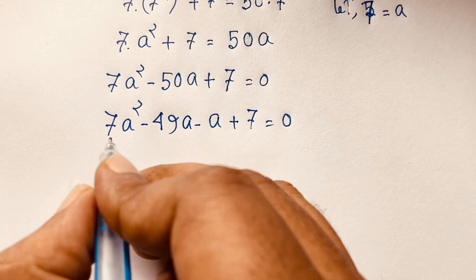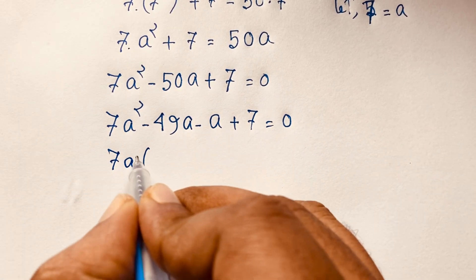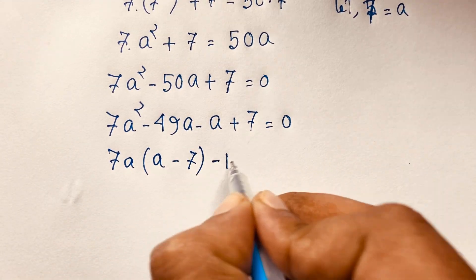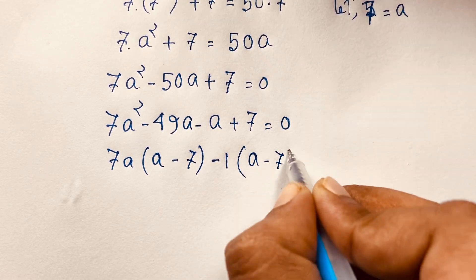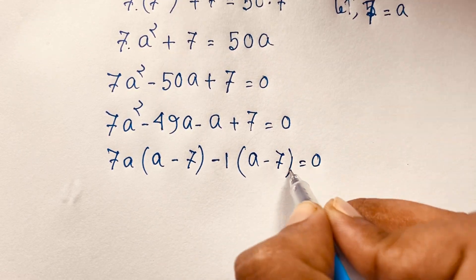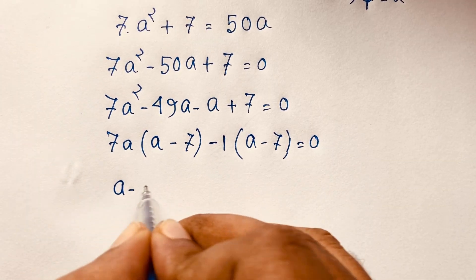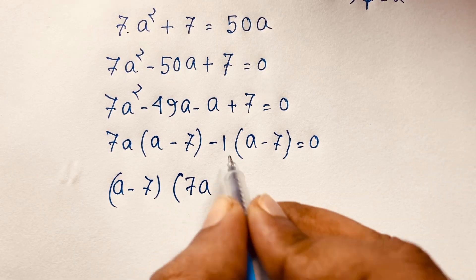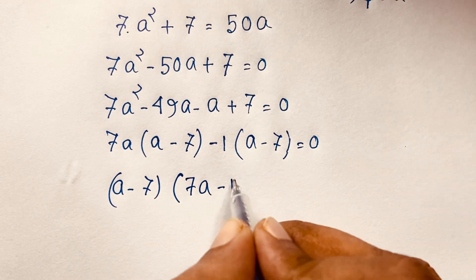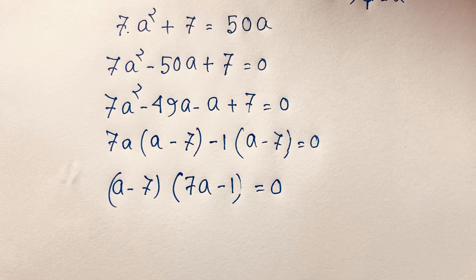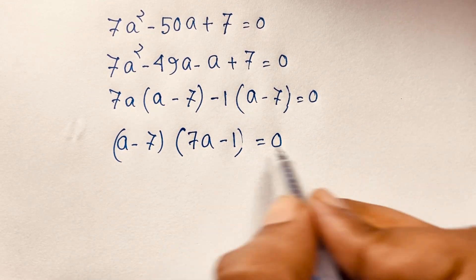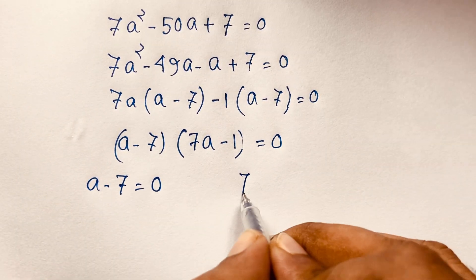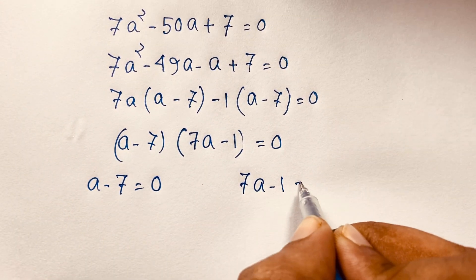Now 7a is common in the first two terms, so factoring gives (a minus 7). Then (a minus 7) is common again, giving us (a minus 7)(7a minus 1) equals 0. Setting each factor to zero: a minus 7 equals 0, and 7a minus 1 equals 0.